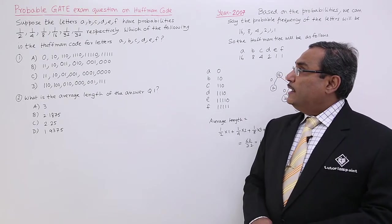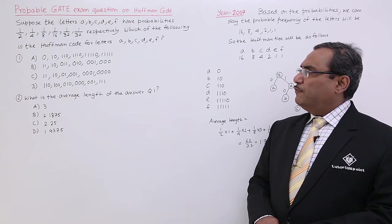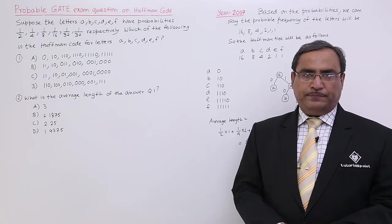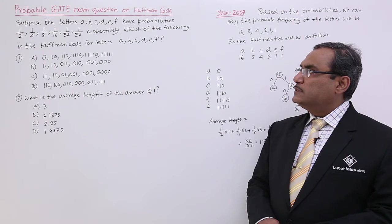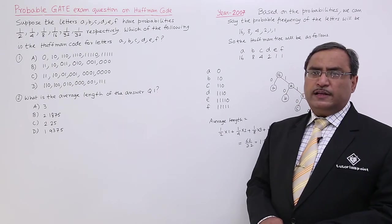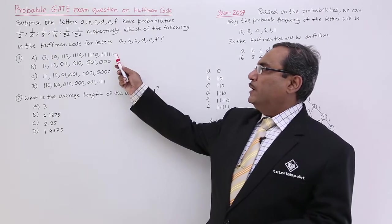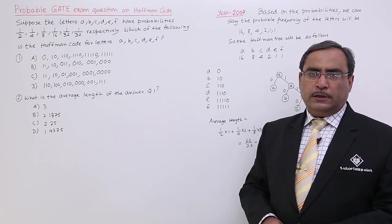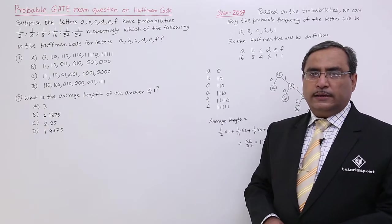Six letters are there, have probabilities given respectively. Which of the following is the Huffman code for letters A, B, C, D, E, F? This is the question. The probabilities are 1 by 2, 1 by 4, and so on, given respectively for A to F. This is the Huffman code they are given. I think it is possible if you can construct the Huffman tree, then only we can select the respective option.